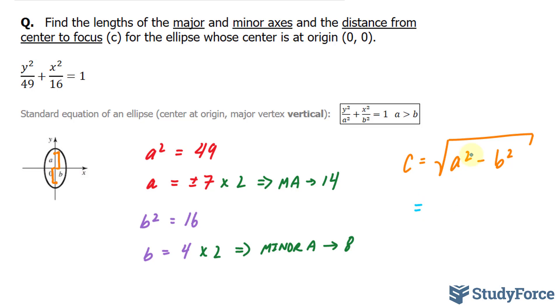We know what a to the power of 2 is, and that's 49. We know what b to the power of 2 is, and that's 16. 49 minus 16 gives us the square root of 33.